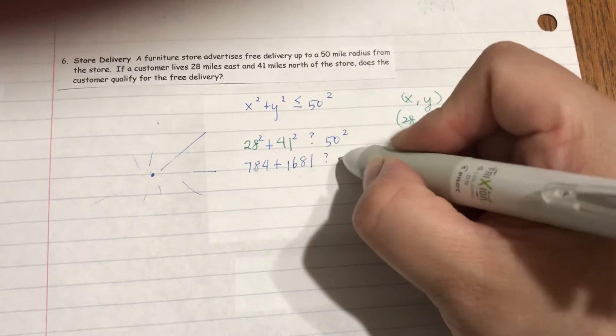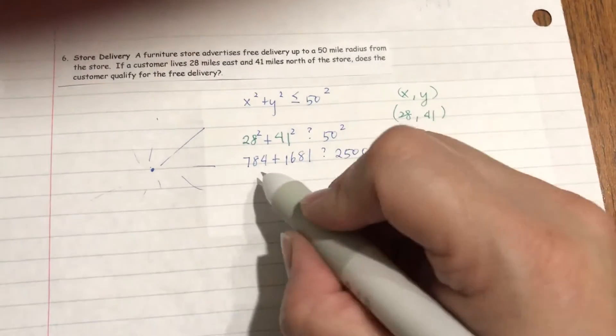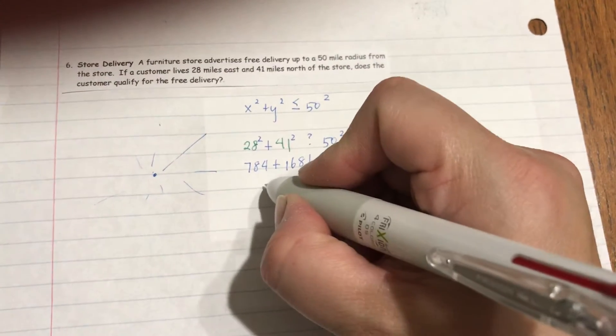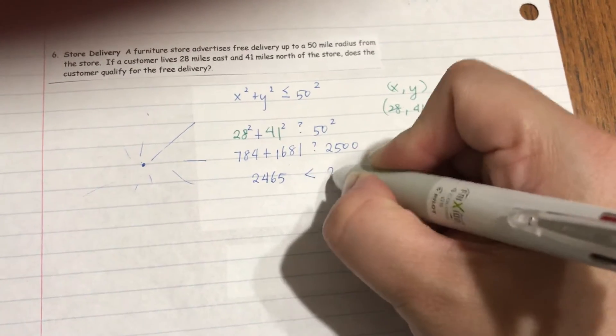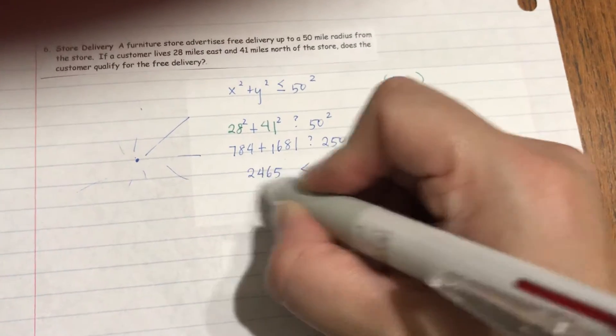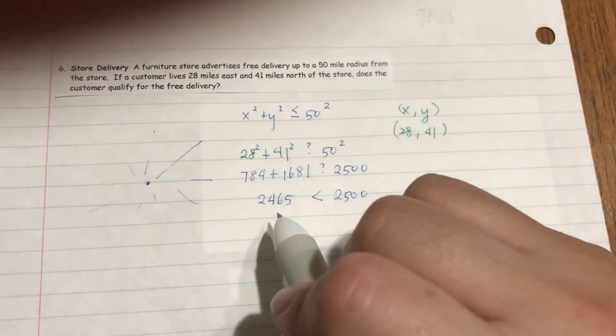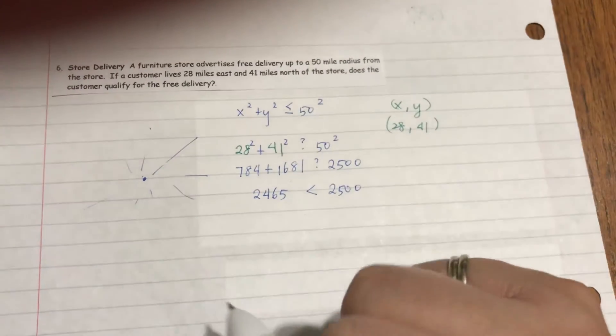Is that less than 2500? If you add this up, you get 2465, which is indeed less than 2500. So the customer lives within the 50-mile radius.